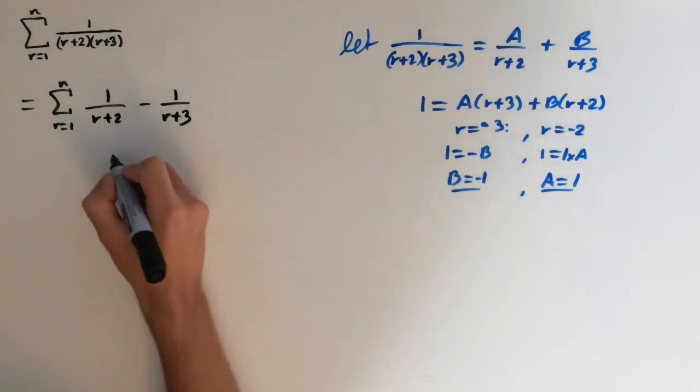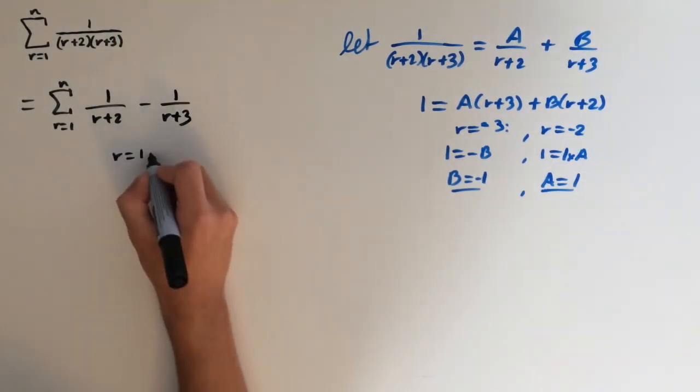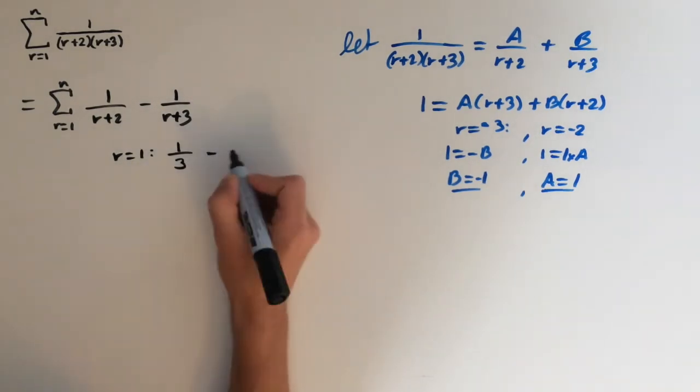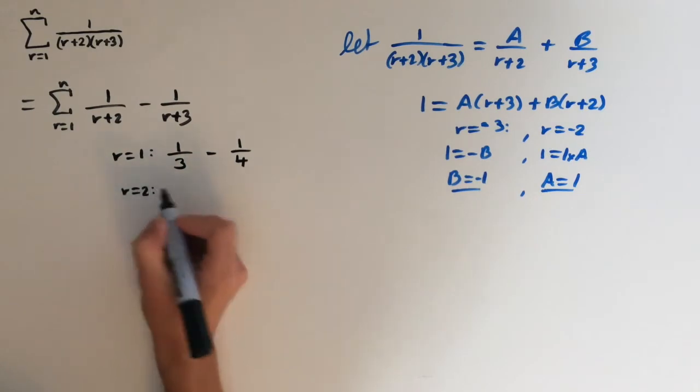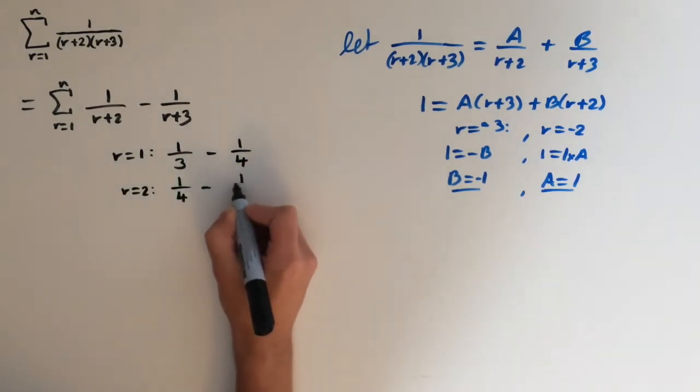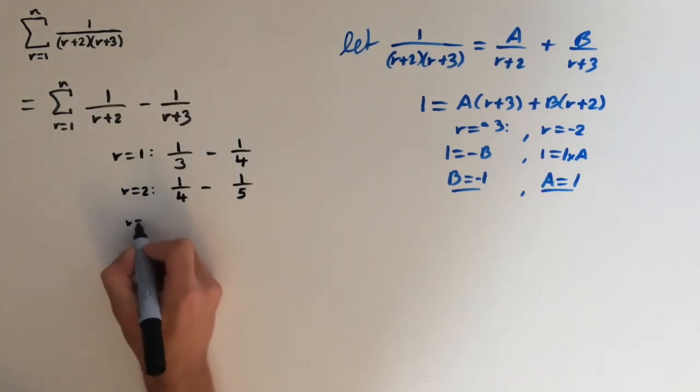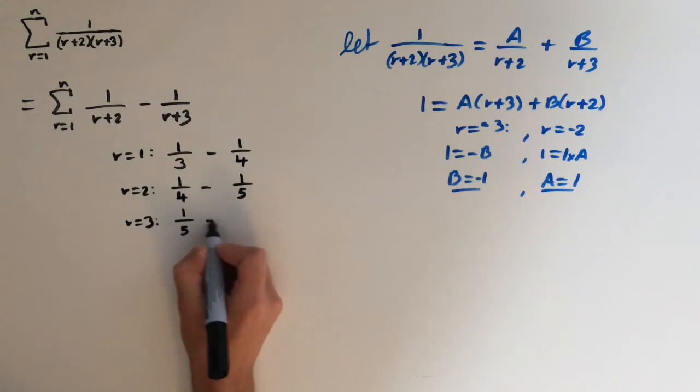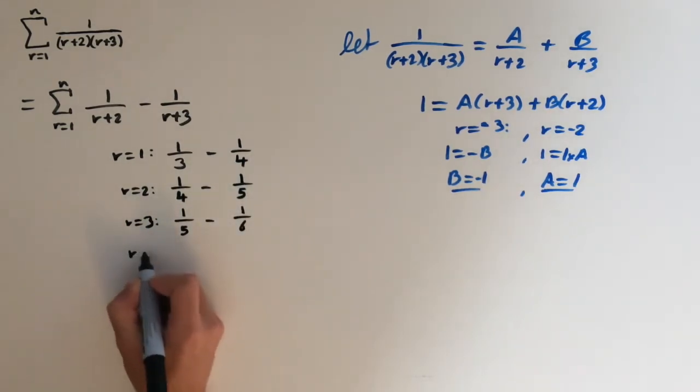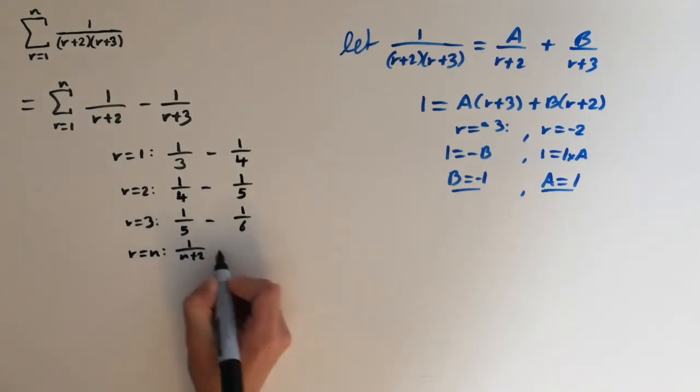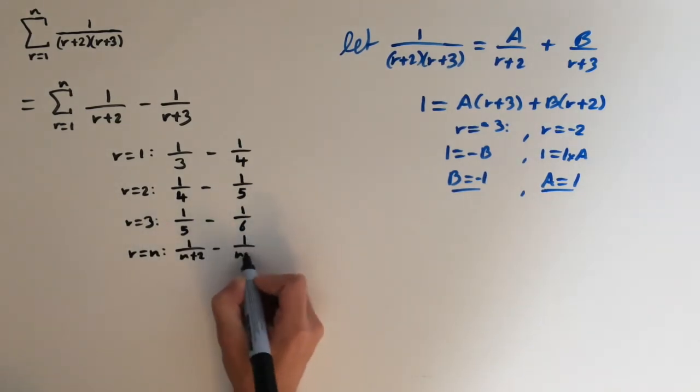So if we input r equals 1, this is going to give us 1 over 3 minus 1 over 4. When r equals 2, this is going to give us 1 over 4 minus 1 over 5. When r equals 3, we'll get 1 over 5 minus 1 over 6. And I'll just do the nth term. So when r equals n, we get 1 over n plus 2 minus 1 over n plus 3.